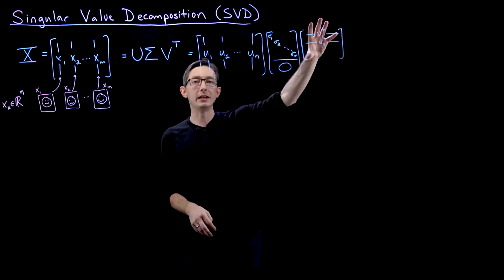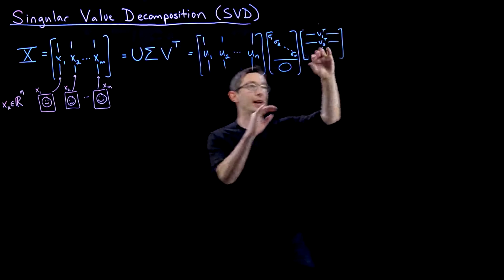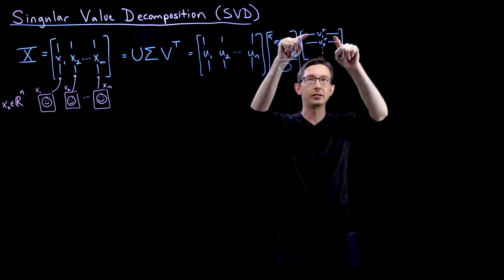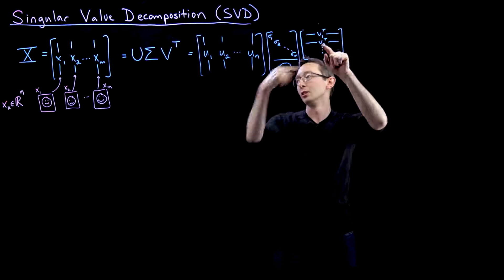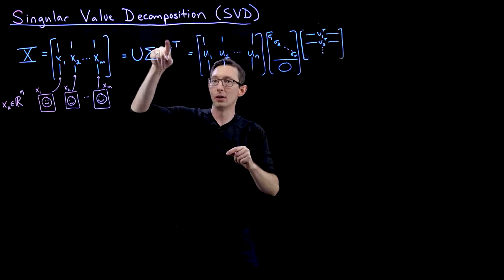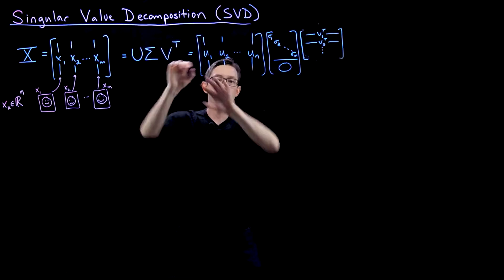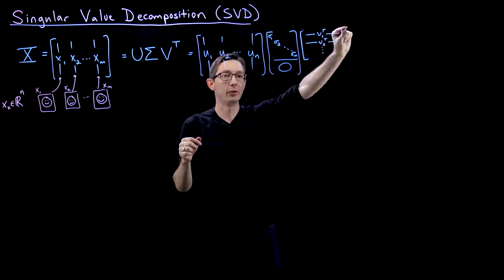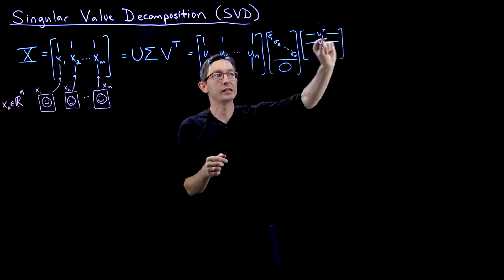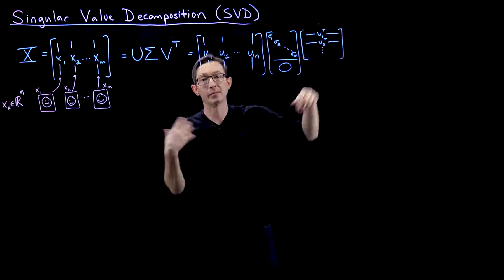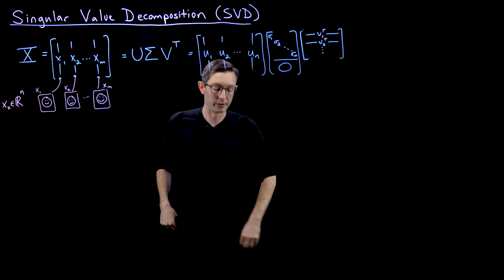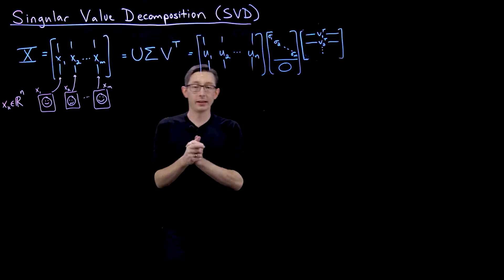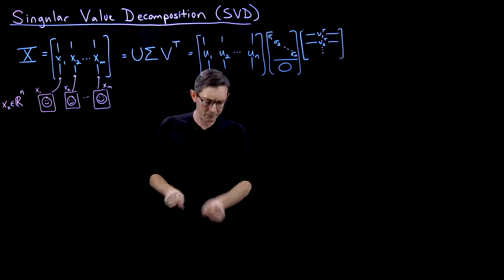I've rewritten V transpose as this matrix here. I take the columns of V — V1, V2, V3 — and transpose them, so now they're row vectors: V1 transpose, V2 transpose, and so on. This will make the next part a little bit easier to understand.